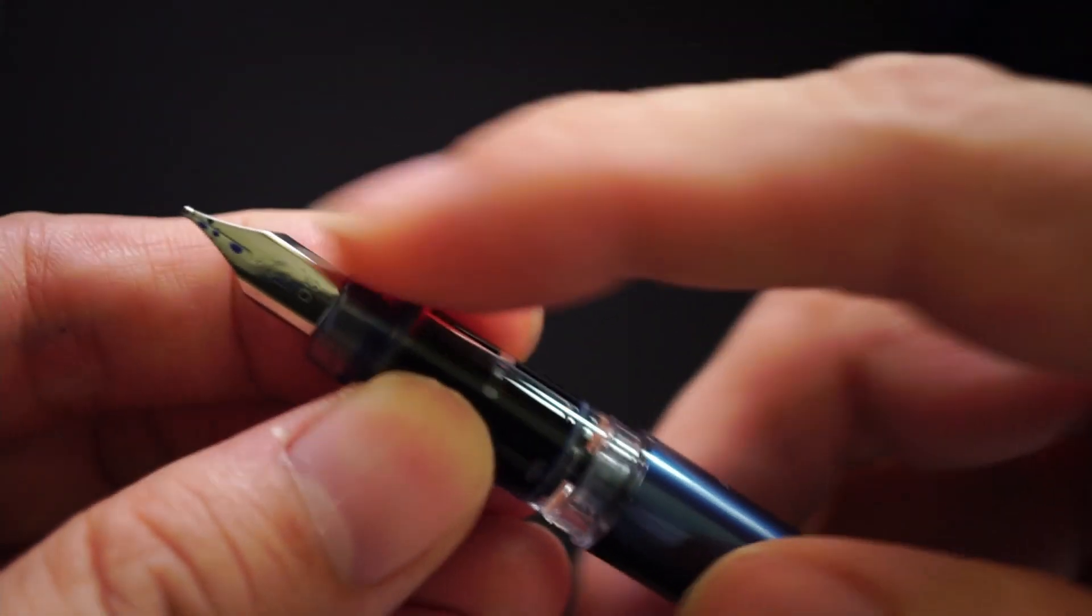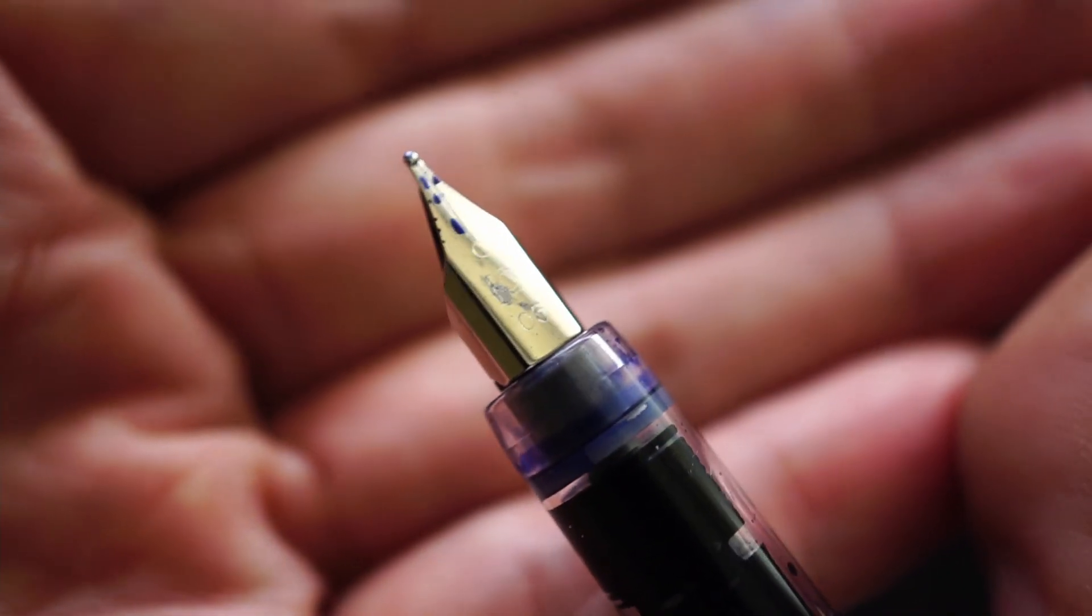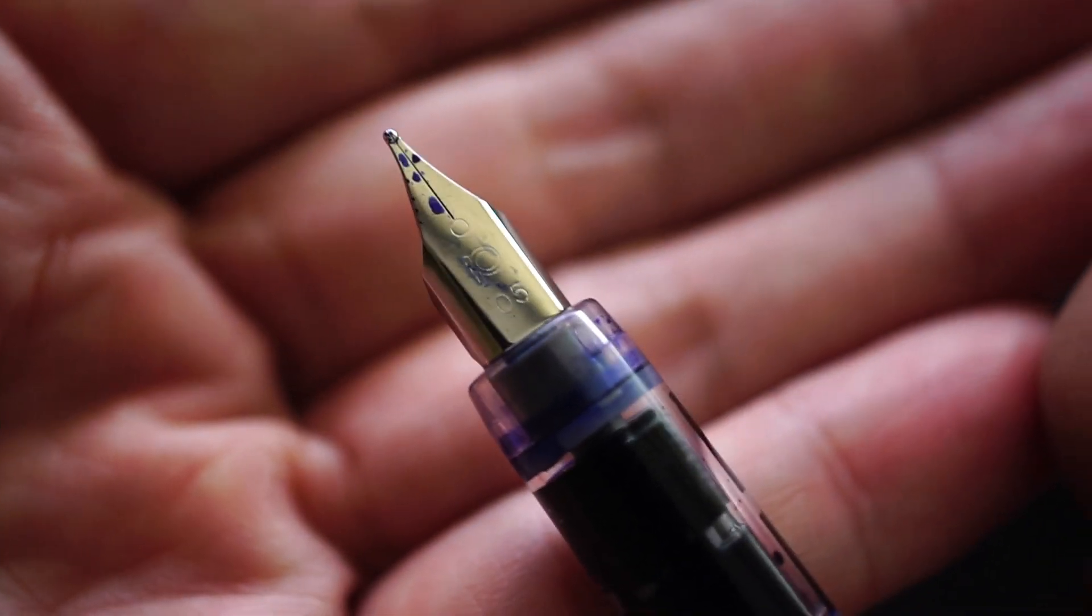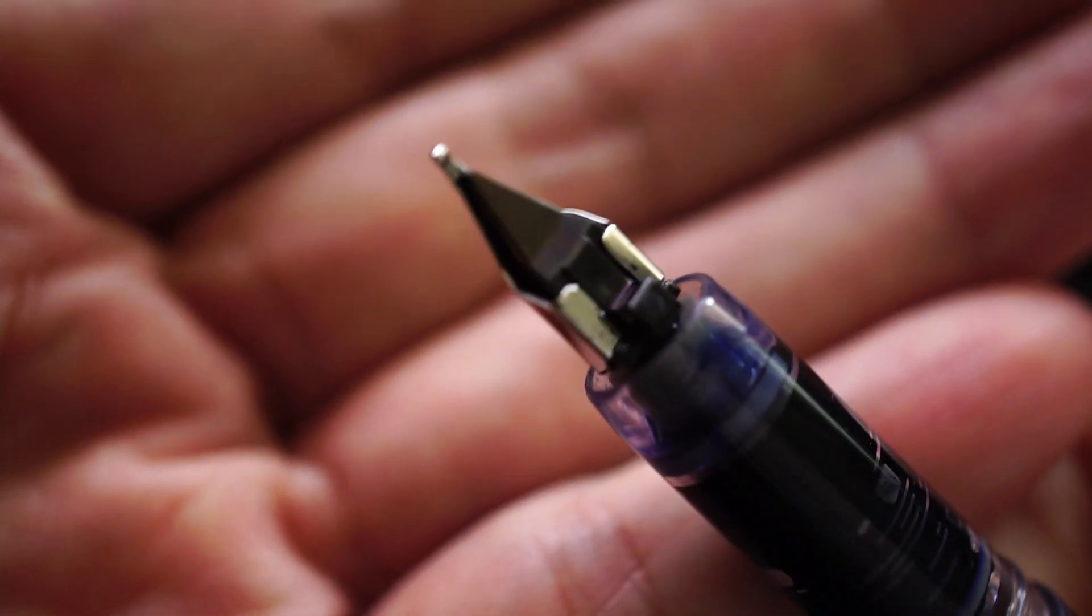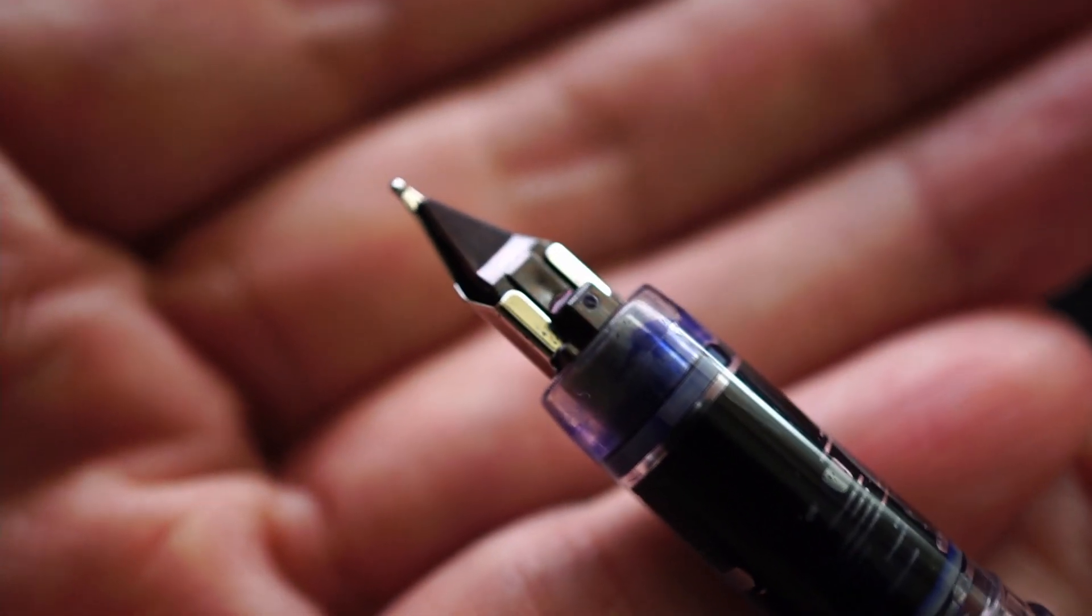This area of the pen, you have the nib which is like I mentioned the Preppy nib. I happen to have the 0.5 or the medium. On the other side you would see that this is also the Preppy feed.